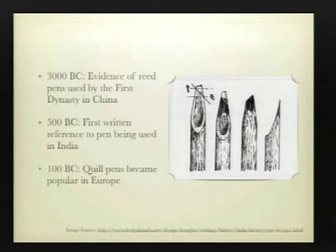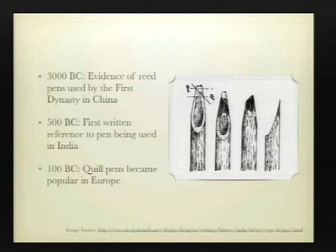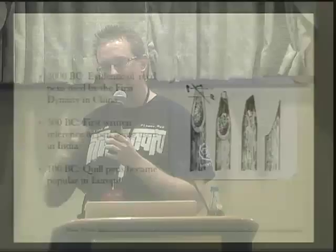They basically take a reed — a hollow plant — carve out the tip, carve it down to make a proper size, dip it into ink. The ink gets sucked up into the pen, then they write and need to keep dipping. That was the first recorded use of pens. Then 500 BC was the first written reference to pens inside literature, and that came out of India. It's interesting to see how some of the technology spread throughout the world.